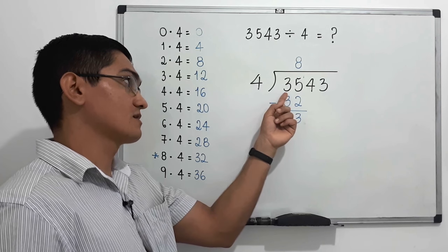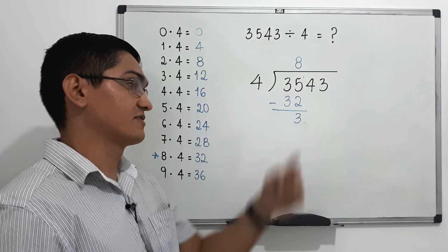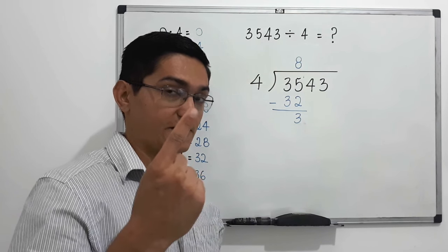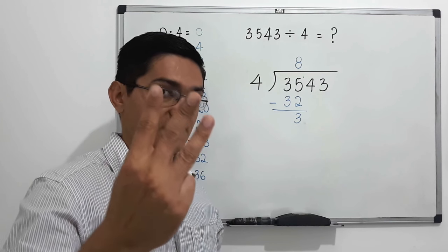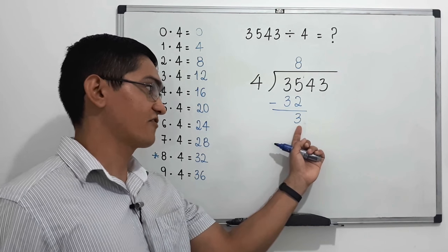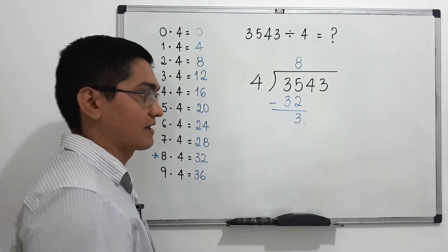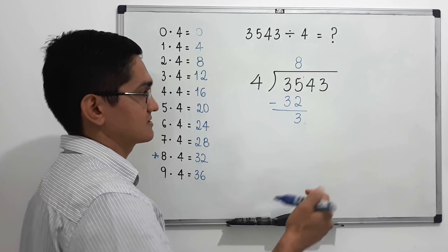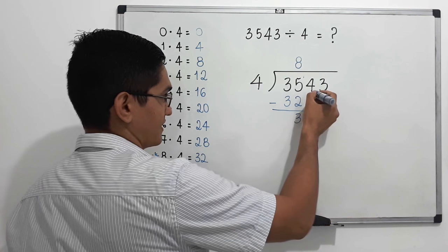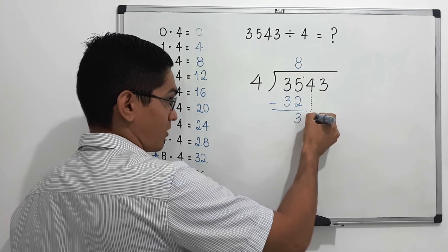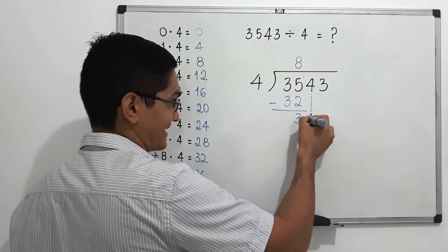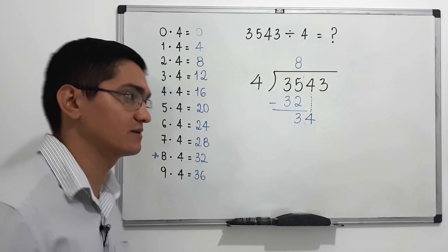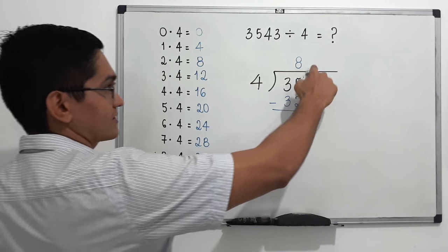Since eight times four equals 32, we write 32 below 35 and subtract. 35 minus 32 equals 3, because 32 + 3 = 35. After a subtraction, we always bring down the next digit — it's a four — giving us 34.